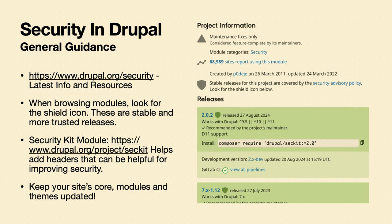The Security Kit module is another one. It provides things like headers that Drupal can set — make sure you're always using HTTPS, and only load images and scripts from your website. You can configure these things to make your website more secure and ensure nothing running in the browser could compromise your website.